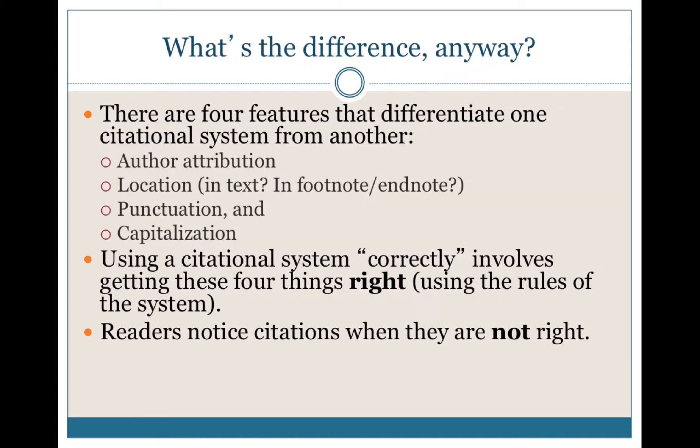So what's the difference, anyway? You heard me mention several different citation styles at the beginning of this PowerPoint. There are four main features that differentiate one citation system from another: author attribution, location, punctuation, and capitalization. These seem like little things — they are little things, small details — but for somebody who knows what they're looking for and has practiced using these different citation systems, they're very obvious. It's very quick to see whether somebody is working with MLA or APA citation, for example.